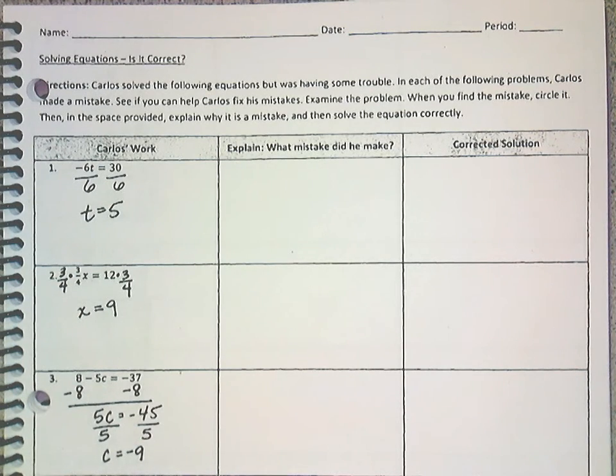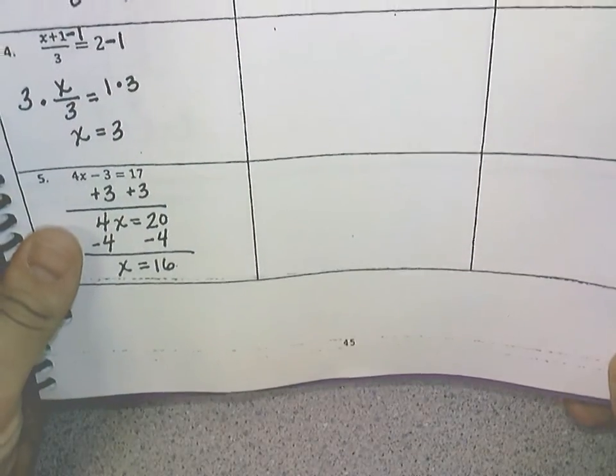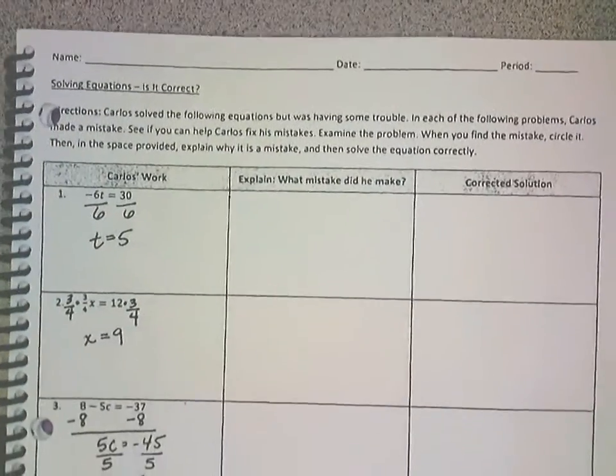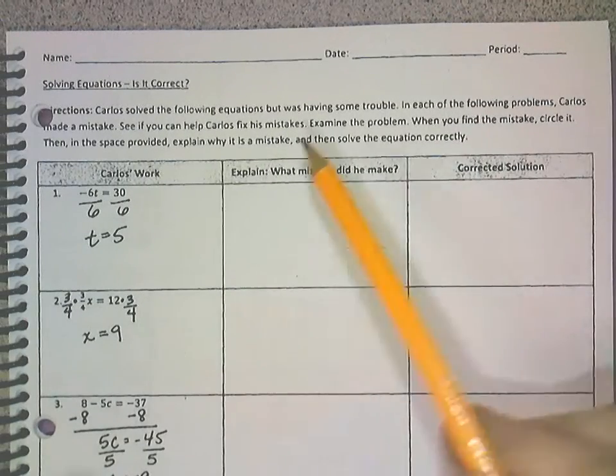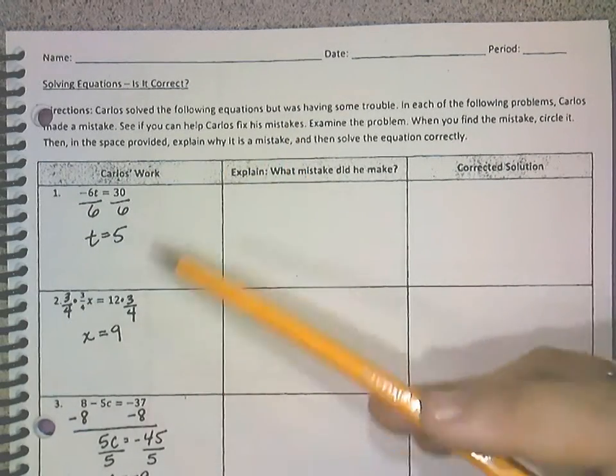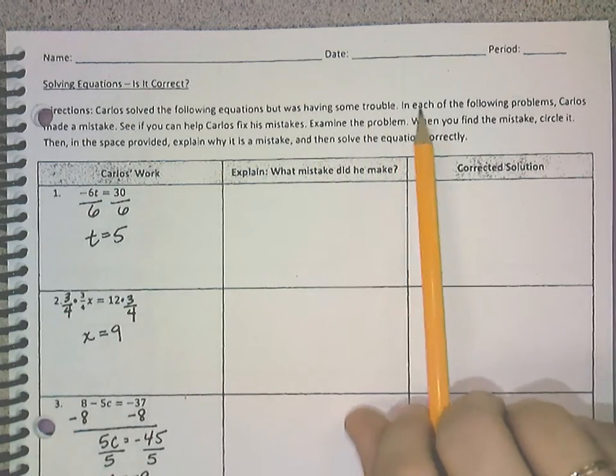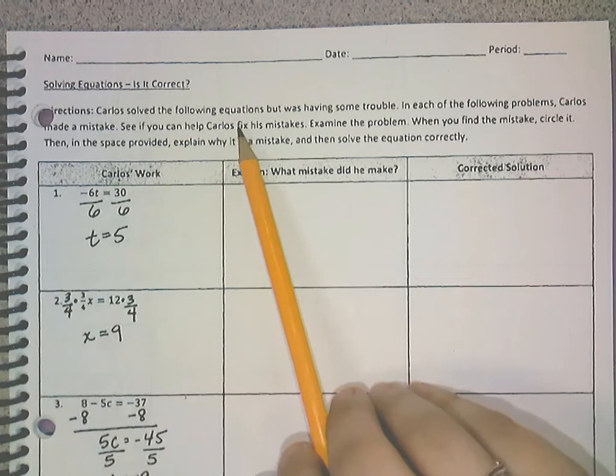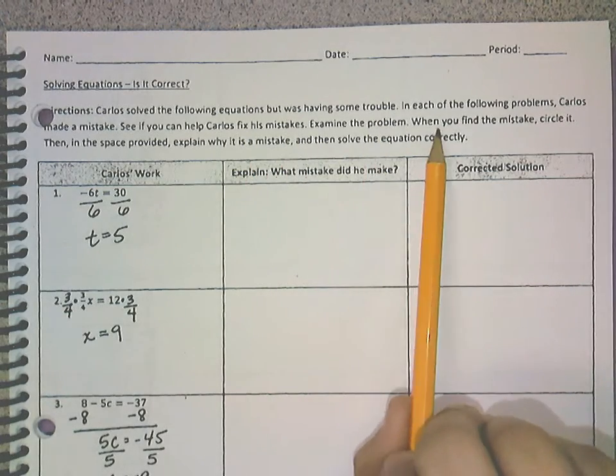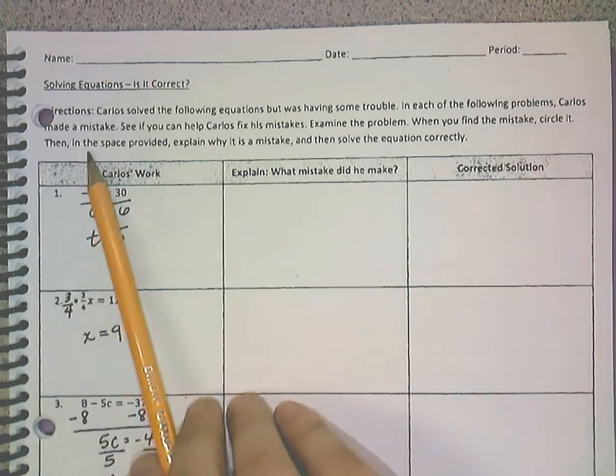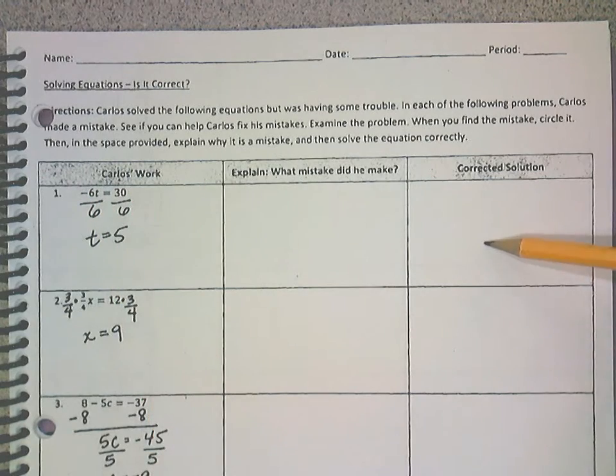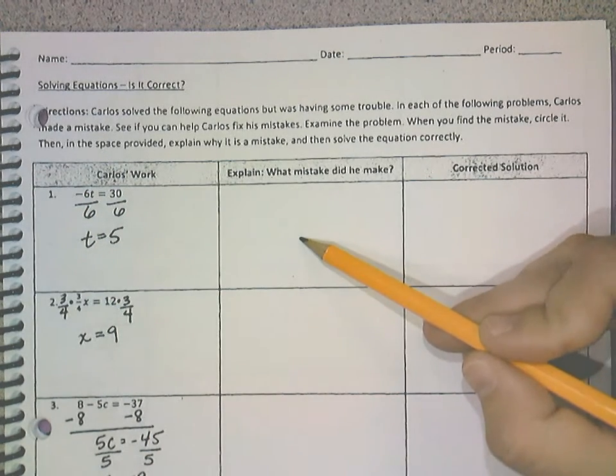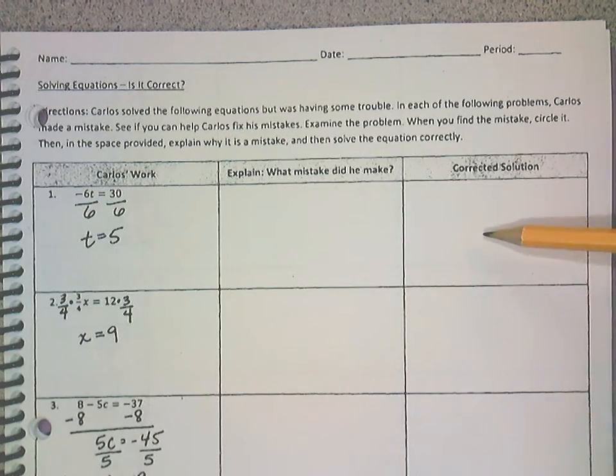Okay, so in your purple book this is page 45. We're going to read the directions first. Carlos solved the following equations but he was having some trouble. In each of the problems, Carlos made a mistake. See if you can help Carlos fix his mistakes. Examine the problem, when you find the mistake circle it. Then in the space provided, which is this one, explain why it is a mistake. And then in this box, solve the equation correctly.